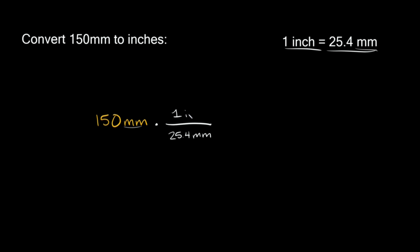Why do you want the same units to be on opposite sides? So that way they can cancel out. Because now we have millimeters on top and millimeters on the bottom, so they can cancel out.